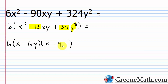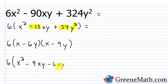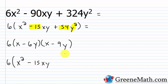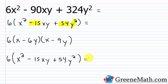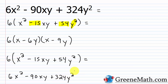Checking with FOIL and putting the 6 out front: x times x is x². The outer gives minus 9xy. The inner gives minus 6xy. Combining: −9 − 6 = −15, so minus 15xy. The last gives (−6y)(−9y) = plus 54y². Now multiplying by 6: 6x², then 6 times −15xy = minus 90xy, and 6 times 54y² = 324y². This matches exactly what we started with. The final factored form is 6(x − 6y)(x − 9y).